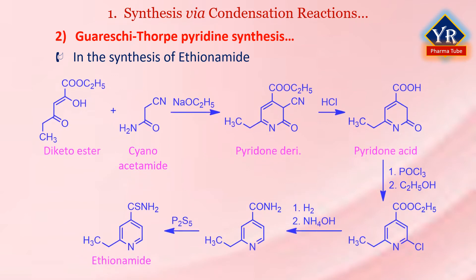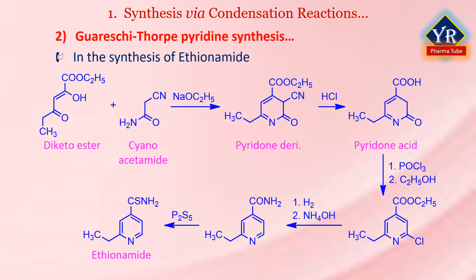Ethionamide is an antibiotic prodrug used in the treatment of tuberculosis. Its synthetic pathway involves the condensation of diketo ester with cyanoacetamide followed by hydrolysis of the resulting pyridine to give pyridine acid. Treatment of this acid derivative with phosphorus trichloride converts the lactam to imine chloride and simultaneous ester formation in ethanol to give an ester derivative. Hydrogenation of this ester derivative to remove the chloride, amide formation, and sequential conversion to the thioamide provides ethionamide.